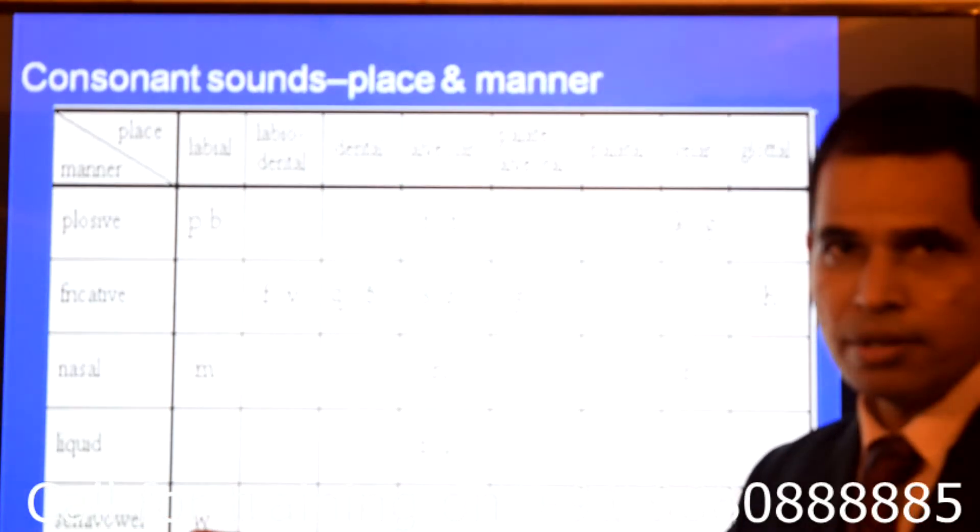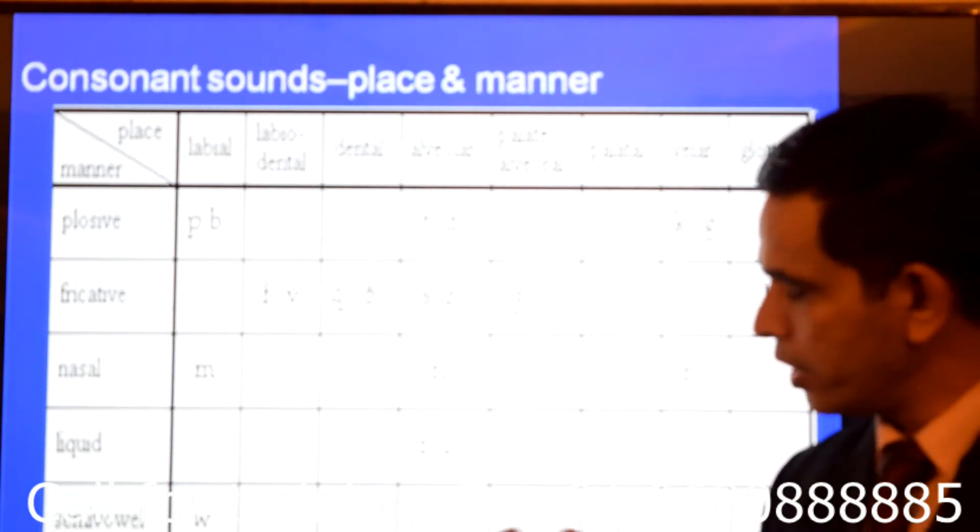If it is semi-vowel, it is also called semi-vowel. Then it is wa and ya.